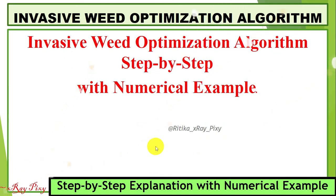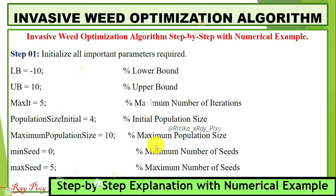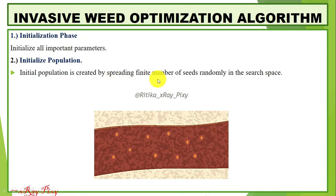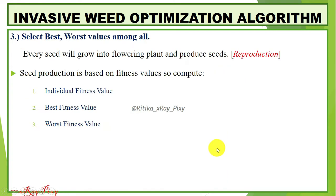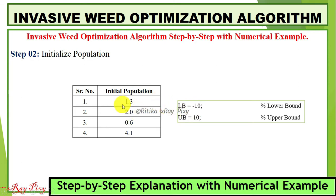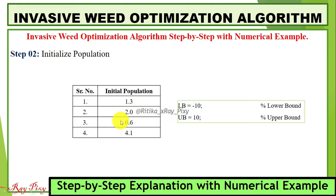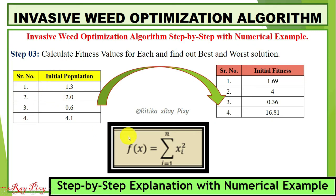Now we will understand the algorithm step by step with a numerical example. First, initialize all important parameters: lower bound = -10, upper bound = 10, maximum iterations = 5, initial population size = 4, maximum population size = 10, minimum number of seeds = 0, maximum number of seeds = 5. Next, we initialize the population by spreading seeds randomly in the search space. We initialize 4 seeds as the initial population size is 4, with all values within the lower and upper bounds. Using a fitness function, we compute the fitness value for each seed.